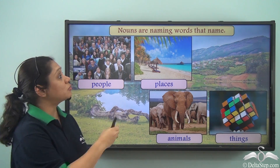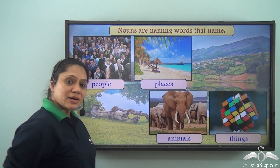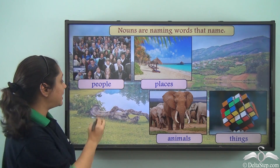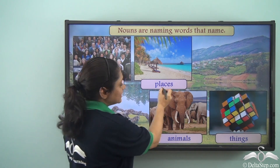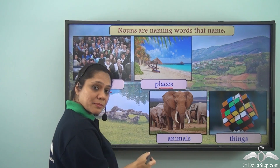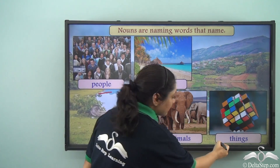We know that nouns are naming words that name people, places, animals and things.